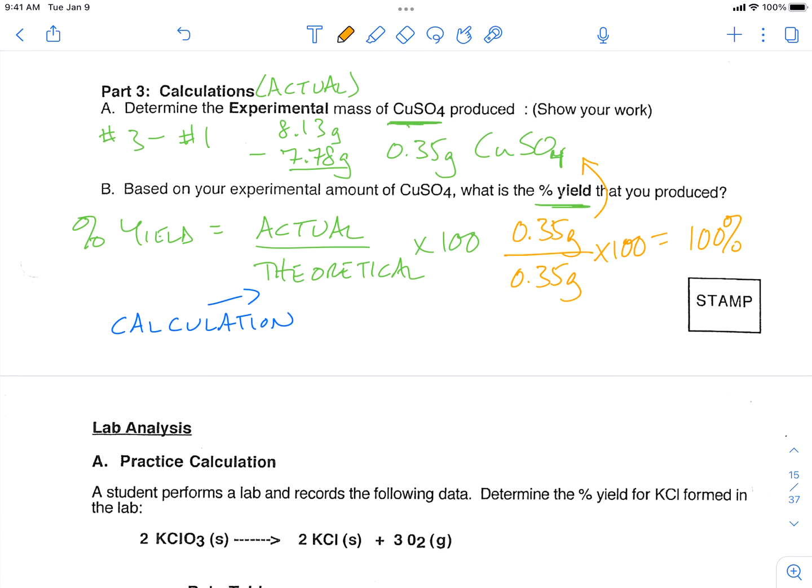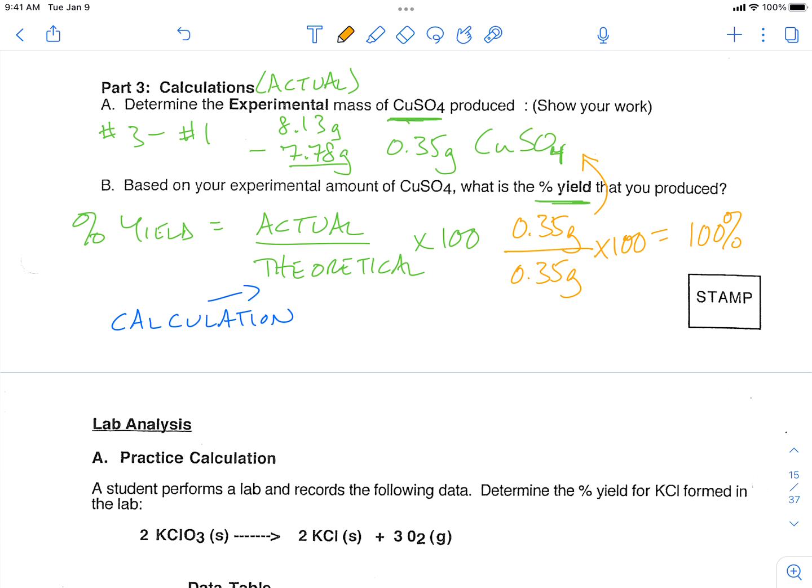Now, in this particular lab, it's actually common to get more than 100% yield. And the reason is, if you remember from the video, water vapor gets stuck up in the test tube. And if you don't notice some of that water vapor, it would actually increase the final mass. So it would increase this value here.